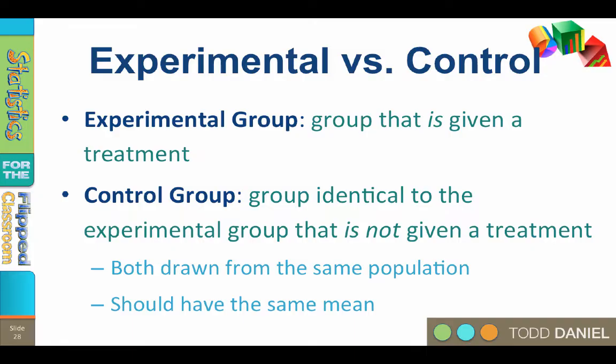If our intervention did not work — if the drug was not effective, if the education did not sink in — then we should expect that after the experiment, the sample mean of the experimental group would still be the same as the sample mean of the control group, both of which are the same as the population mean. In other words, nothing has changed, because the intervention didn't work.